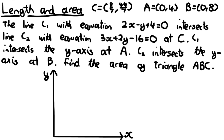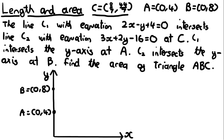Sometimes the question will give you the diagram, but as it doesn't here, draw a quick sketch. Point A is at (0, 4), point B is at (0, 8), and point C is at (8/7, 44/7). Since 44/7 is approximately 6.29, C is going to be in between those two y-values, sitting at roughly that position on the graph.